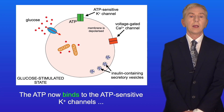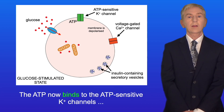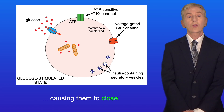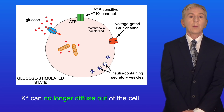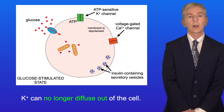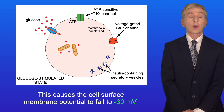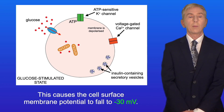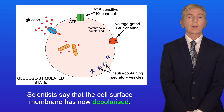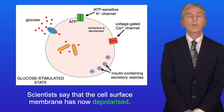The ATP now binds to the ATP-sensitive potassium ion channels, causing them to close. Potassium ions can no longer diffuse out of the cell. This causes the cell surface membrane potential to fall to minus 30 millivolts. Scientists say that the cell surface membrane has now depolarized.